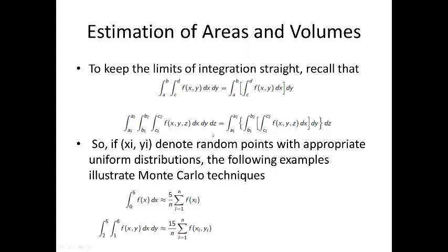So if xᵢ denotes random points with appropriate uniform distribution, the following illustrate Monte Carlo techniques. This first one is going to be 5/n times the sum of the individual points. This one will be 5 times 3, which is 15, over n times the sum of the individual points.